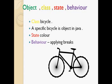This example shows the object, class, state, and behavior of a particular object. Here we have an object called cycle. This cycle belongs to the class bicycle, and the state of this object is black, with corresponding behaviors.